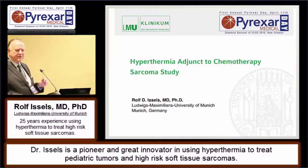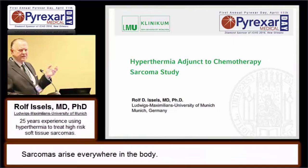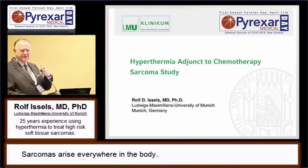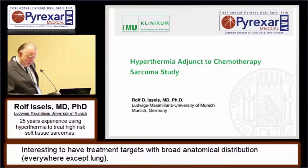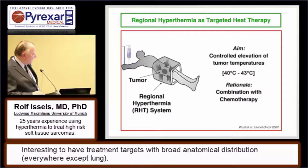The idea was to talk about regional hyperthermia as a targeted approach — targeting the tumor deep in the body, but it could also be extremity lesions. The model of sarcoma is interesting because soft tissue sarcomas arise everywhere in the body. It was in the early 1996 or 1997 when we decided to do this trial, having all the high-risk tumors distributed all over the body. The only one we could not treat at the time was, of course, lung tumors.